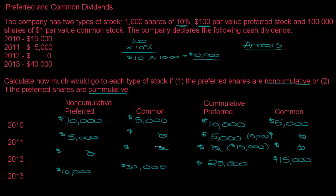You can see the differences here. The first three years look very similar, but in year four the preferred shareholders under non-cumulative only get the amount due for that year. Under cumulative, they get everything owed in arrears plus the current year, so the common shareholders end up getting less money. If you're buying common shares, you want to know whether the preferred dividends are cumulative or non-cumulative because it could affect how much money you get if the company doesn't pay dividends every year.